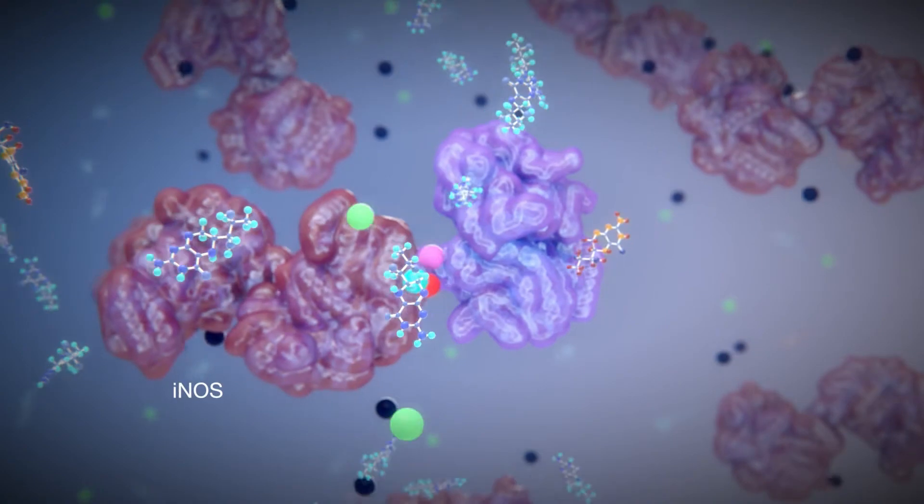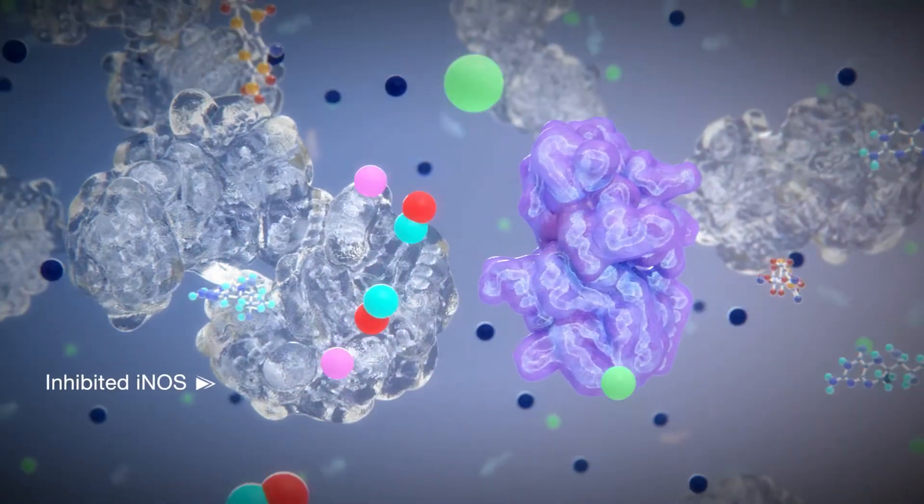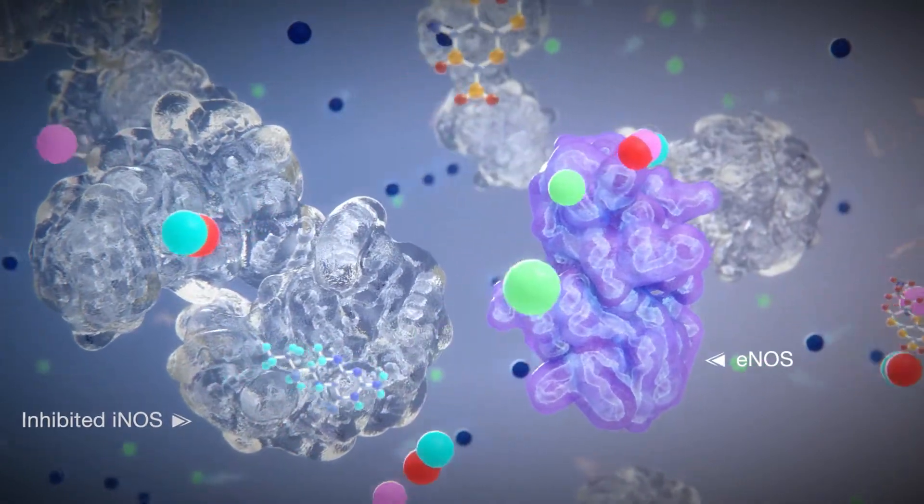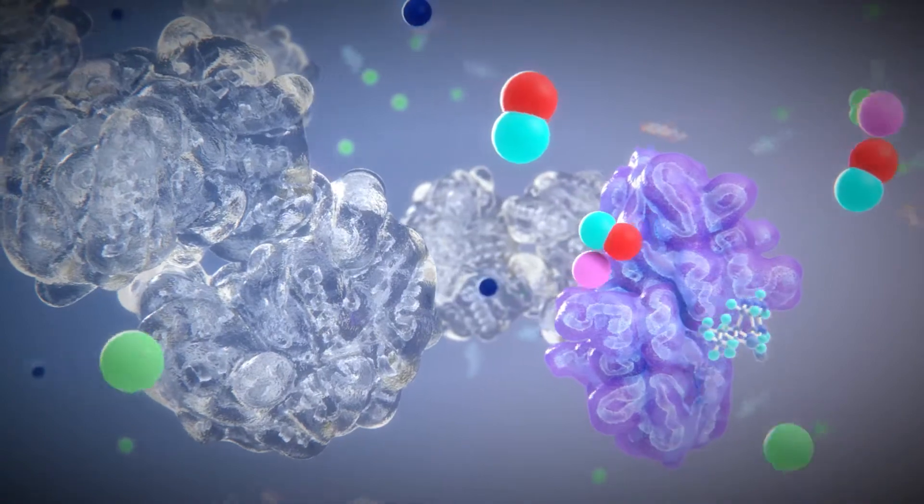This results in an improved specificity profile that almost exclusively targets INOS while having little effect on constitutive isoforms. VAS-203 therefore does not inhibit basal INOS activity.